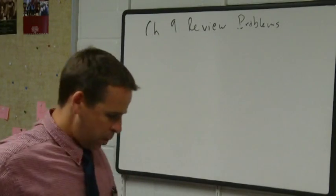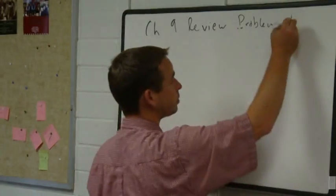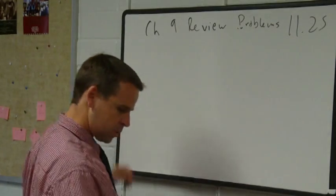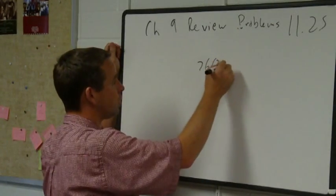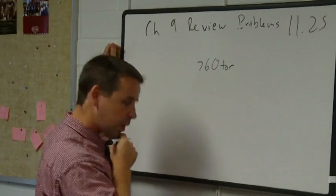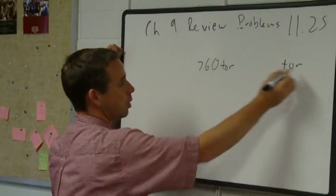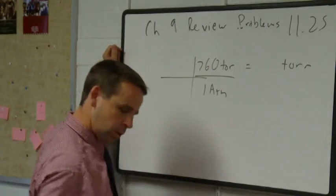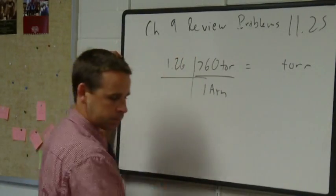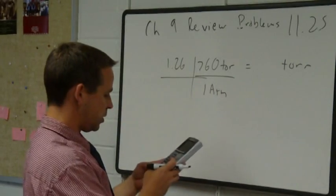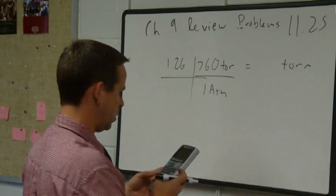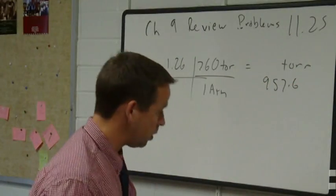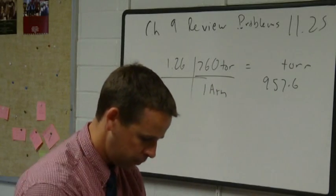Problem 1125, carry out the following conversion: 1.26 atmospheres to torr. There are 760 torr for every one atmosphere. So 1.26 times 760 gives 957.6 torr, or 958 torr with significant figures.